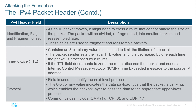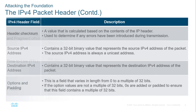The header checksum is used for error checking. Source and destination are 32-bit binary values of the IP address. Lastly, options and padding is a field that varies in length between 0 and 32 bits. If the option values are not a multiple of 32 bits, zeros are added to the padding to ensure the field contains a multiple of 32 bits — basically making sure it's rounded to even numbers.